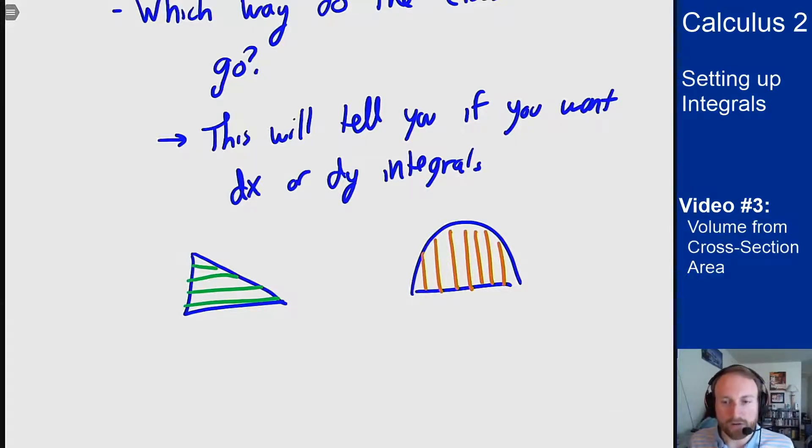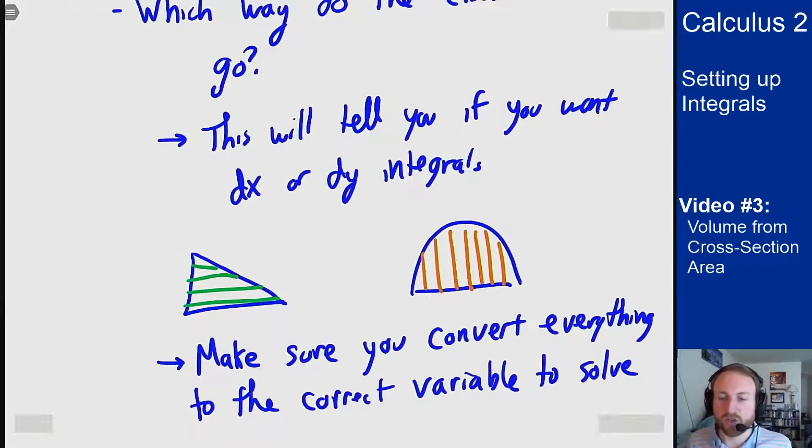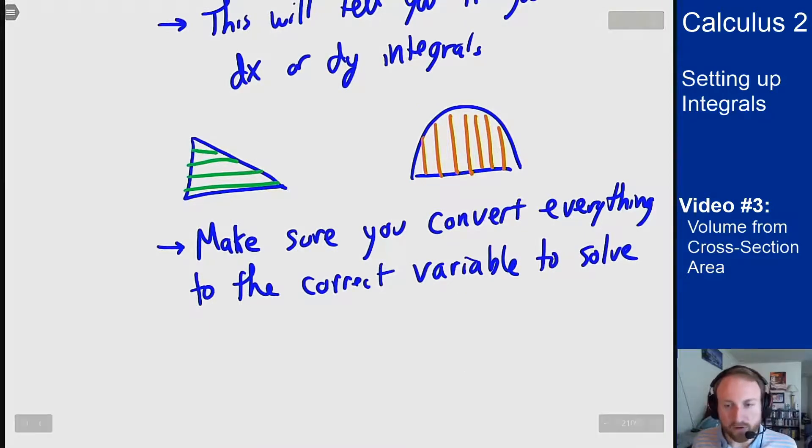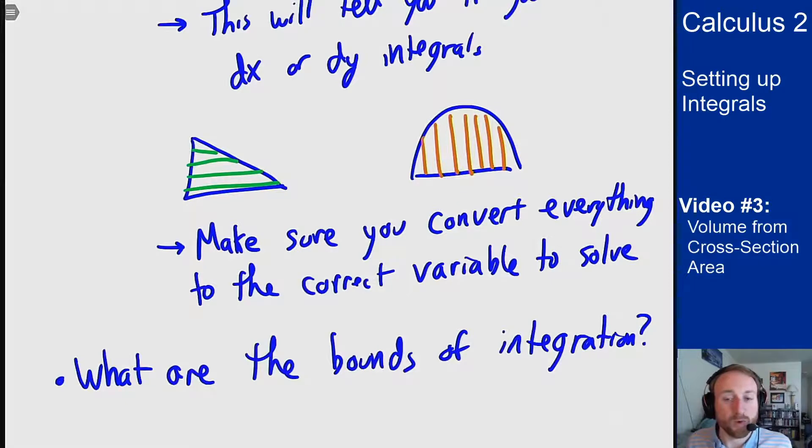This also tells you what variable you must convert everything to to actually solve the problem. You got to make sure you actually get into the right variable to solve the problem correctly. And then the last thing to watch out for are the bounds of integration. Where does my region stop or start? How is that going to determine what my bounds should be to find the total volume of this object?